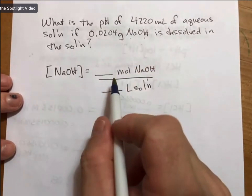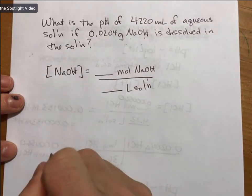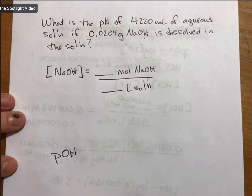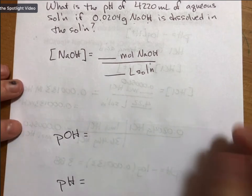We need to do a molar mass calculation, and I'm going to save a little space for that. Then we'll be able to find the pOH and then the next step will be to find the pH.